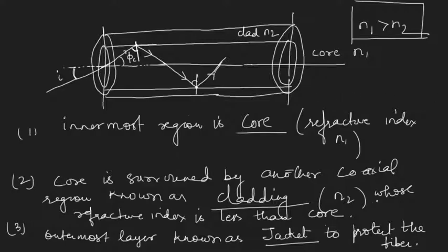Now we will see what we do, or how we make sure that the angle at the core-clad interface is more than the critical angle, and what the condition required to achieve this is. We will try to see this in the next lecture. Thank you.